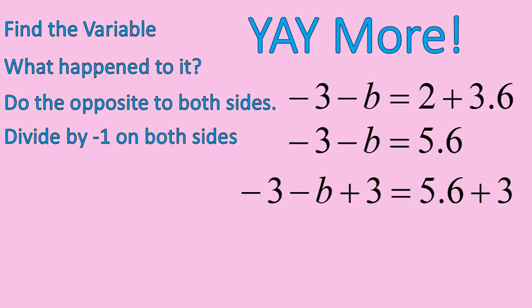Adding 3 to both sides keeps it balanced. Adding 3 to this side undoes or gets rid of the negative 3. Positive 3 and negative 3, they eliminate each other, basically. They cancel each other out. They leave me with negative B by itself on the left side of the equation. 5.6 plus 3 gives me 8.6.